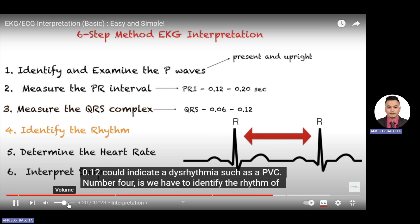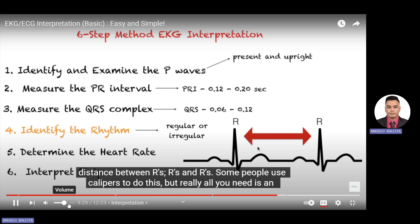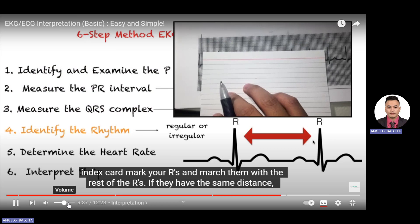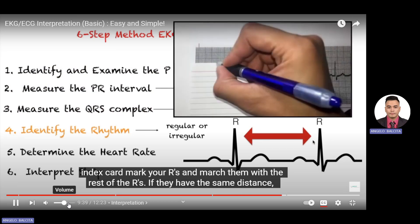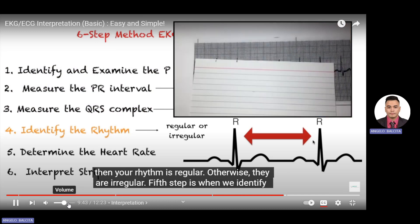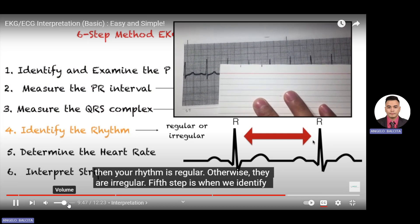Step four: identify the rhythm of your strip — it could be regular or irregular. The way we do this is to measure the distance between R waves. Some people use calipers, but really all you need is an index card. Mark your R waves and march them across the rest of the strip. If they have the same distance, your rhythm is regular; otherwise, it is irregular.